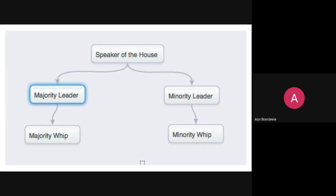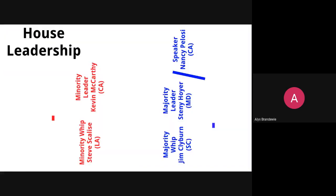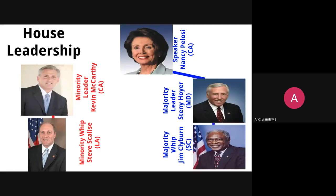So right now, Democrats have more members of the House, so they are the majority party. Republicans have fewer members, so they are the minority party. The current House leadership: the Speaker of the House is Nancy Pelosi from California, the majority leader is Steny Hoyer from Maryland, and the majority whip is Jim Clyburn from South Carolina. The minority leadership is made up of minority leader Kevin McCarthy from California and minority whip Steve Scalise from Louisiana.